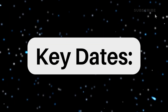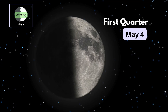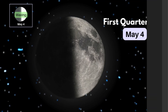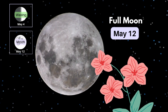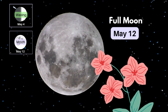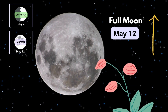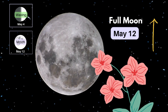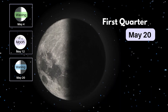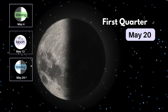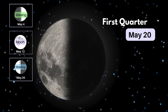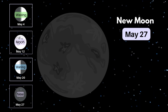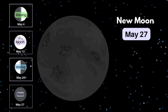Key dates this month: First quarter, May 4th. This month, the full Moon on May 12th is the Flower Moon. Last quarter, May 20th. New Moon, May 27th.